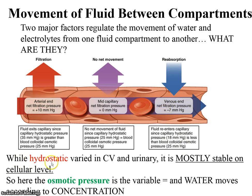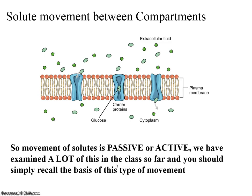Hydrostatic varied in the cardiovascular system and in the urinary system, but it is mostly stable on the cellular level. Out here, this push has really dissipated. So out here in the cells, it's really osmotic pressure that varies, and water moves according to concentration — which you learned back in A&P 1. Water is attracted to the solutes. Solute movement between compartments depends on these channels and carriers.